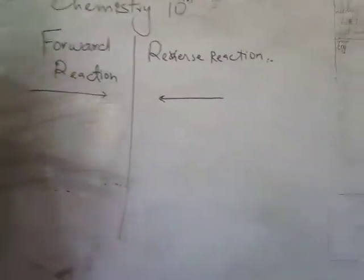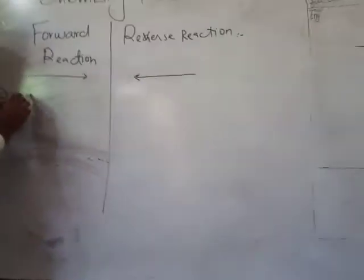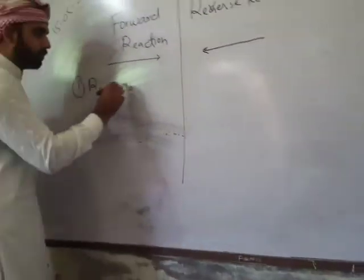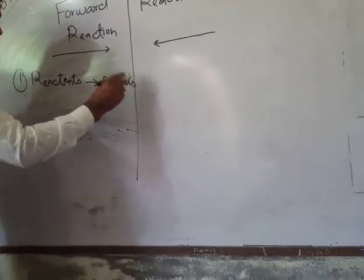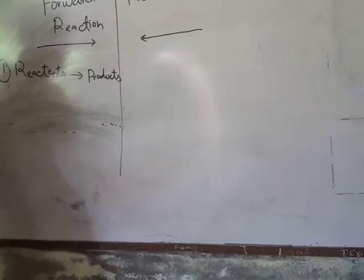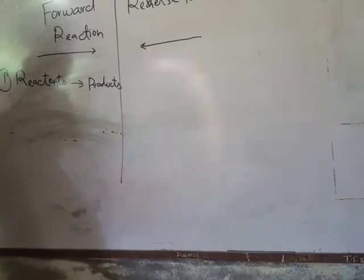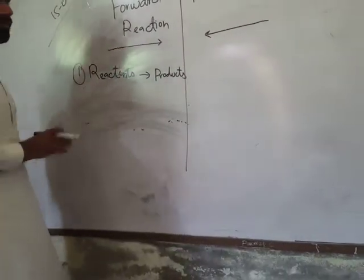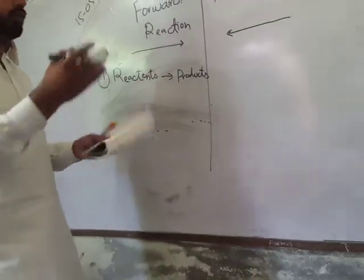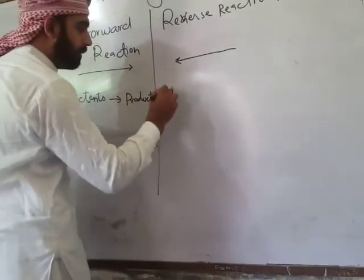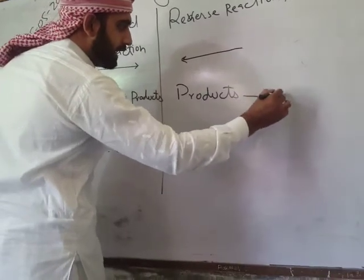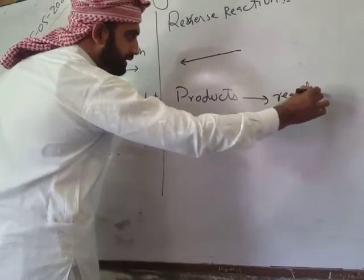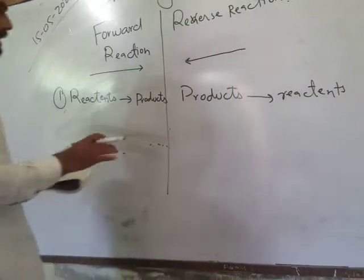This is our forward reaction. The effect is that the reactants combine — the products we want to use. It combines the reactants so that the chemical reaction starts and produces the product. But in the reverse reaction, the reaction is the opposite — your products combine to produce and form the reactants.